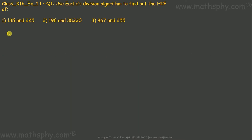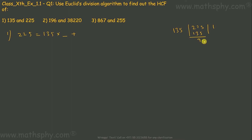Let's take up the first pair: 135 and 225. We write 225 equals 135 into something plus a remainder. Let's divide 225 by 135. Once you divide, 1 is the quotient and 90 is the remainder — if you divide further it gets into decimals. So I write 1 as the quotient and 90 as the remainder. So 225 equals 135 into 1 plus 90.